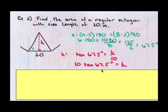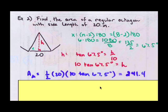I'm going to leave that there for the time being so I don't have to worry about rounding. I'm ready to go. I have my base which is 20. I have my height which is 10 tangent of 67.5. So the area of that triangle is one half the base, 20, times the height, 10 tangent of 67.5, and it's approximately 241.4 units. That's one triangle.